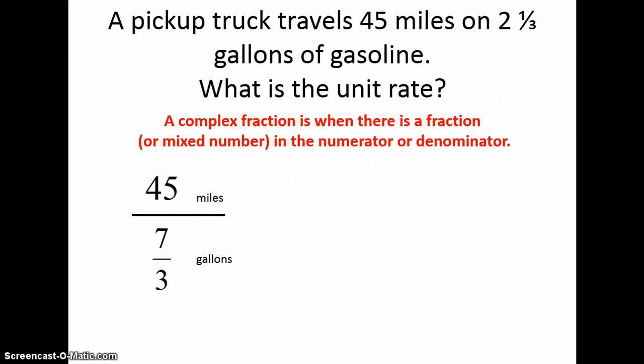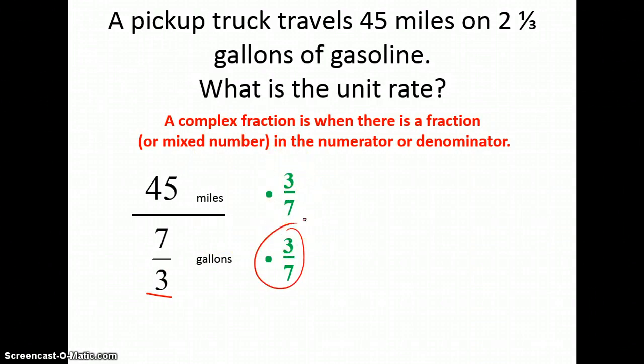Now, I need to divide the numerator and denominator by seven-thirds. Well, when I divide by a fraction, that's the same thing as multiplying by its reciprocal. So, instead of dividing by seven-thirds, I'm going to multiply the numerator and denominator by the reciprocal of seven-thirds, which is three-sevenths.